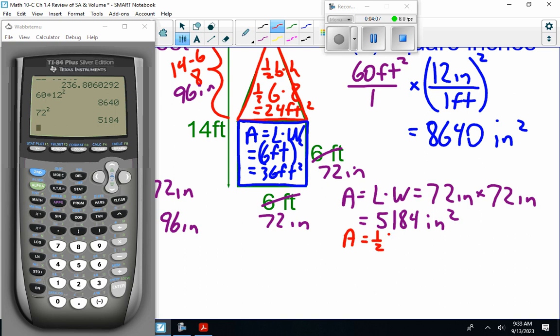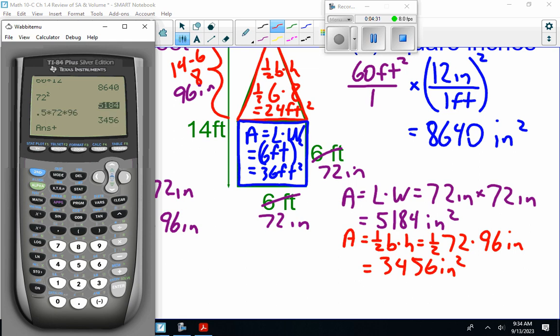The triangle is base times height, one-half, the base is 72 inches, the height is 96 inches. One-half times 72 times 96, 3456 inches squared. Add that to the original number, 8640.